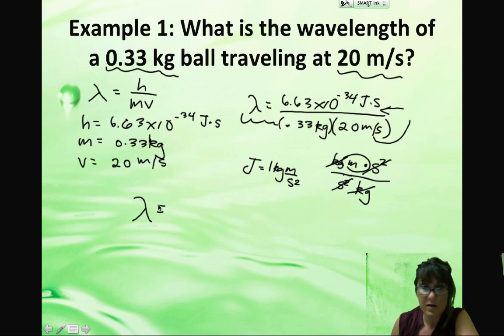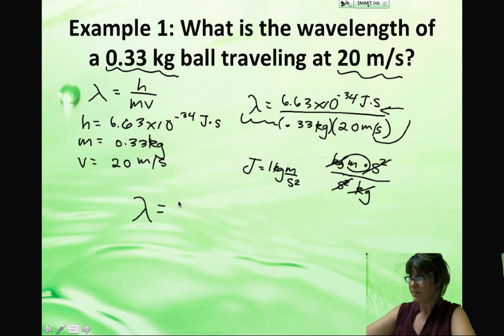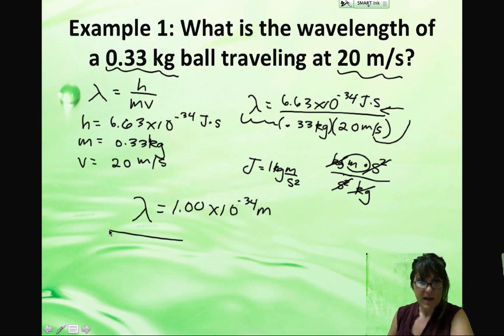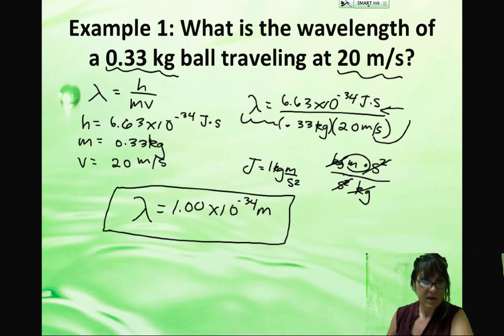Now let's get our calculator out. Use the E button for your scientific notation. And we get a value of 1.00 times 10 to the negative 34 meters. That's the wavelength of a ball that is 0.33 kilograms in its mass going 20 meters per second.